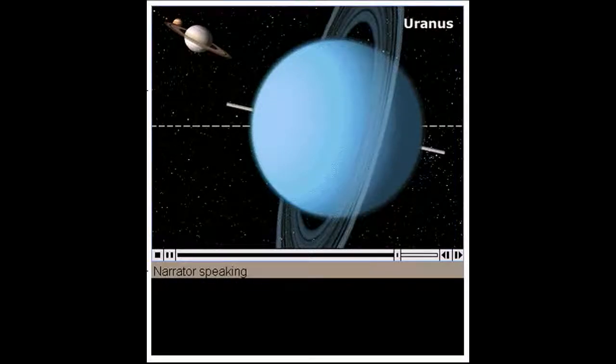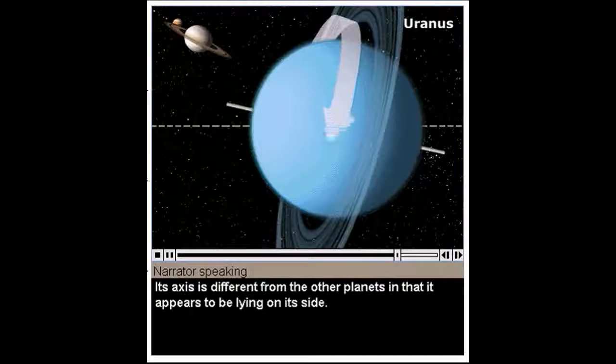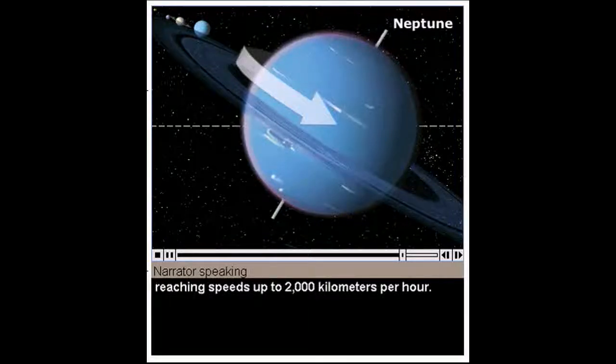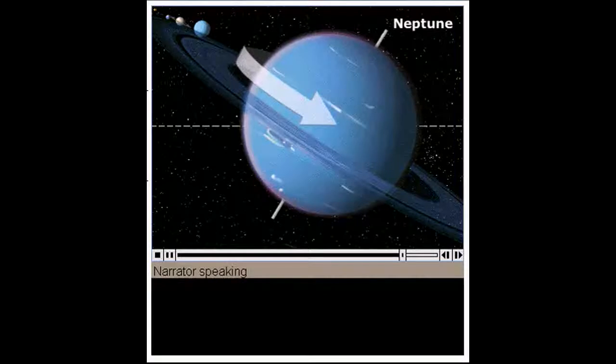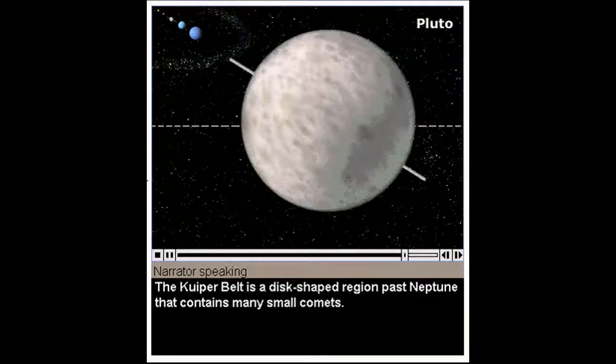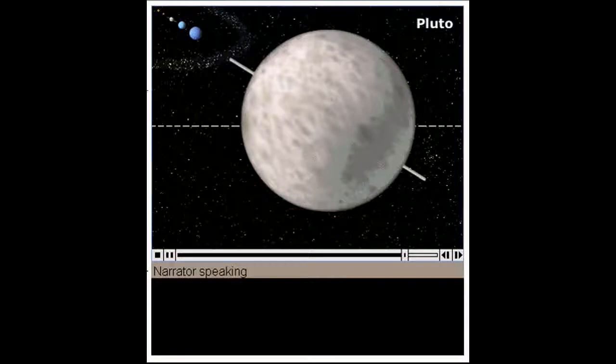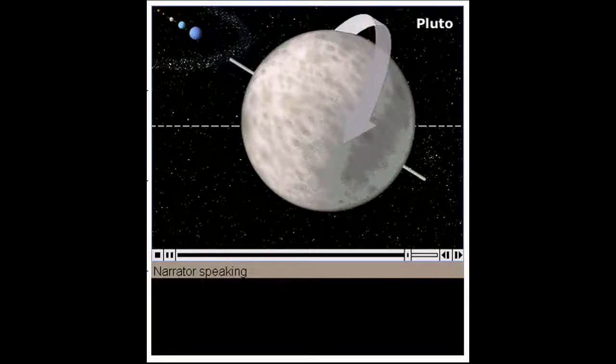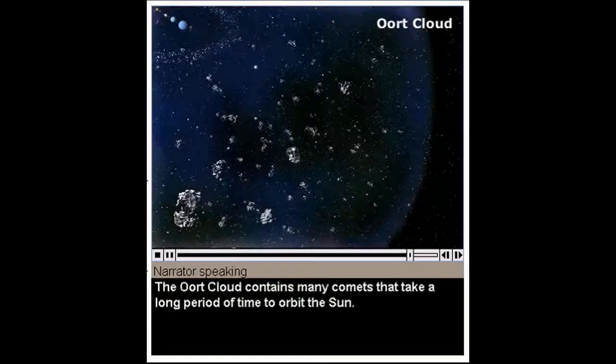Uranus has more subtle rings. Its axis is different from the other planets in that it appears to be lying on its side. Neptune has faint rings, as well as the fastest winds in the solar system, reaching speeds up to 2,000 kilometers per hour. The Kuiper belt is a disk-shaped region past Neptune that contains many small comets. Pluto is by far the smallest planet. Its orbit is so elliptical that it's sometimes closer to the sun than Neptune is.